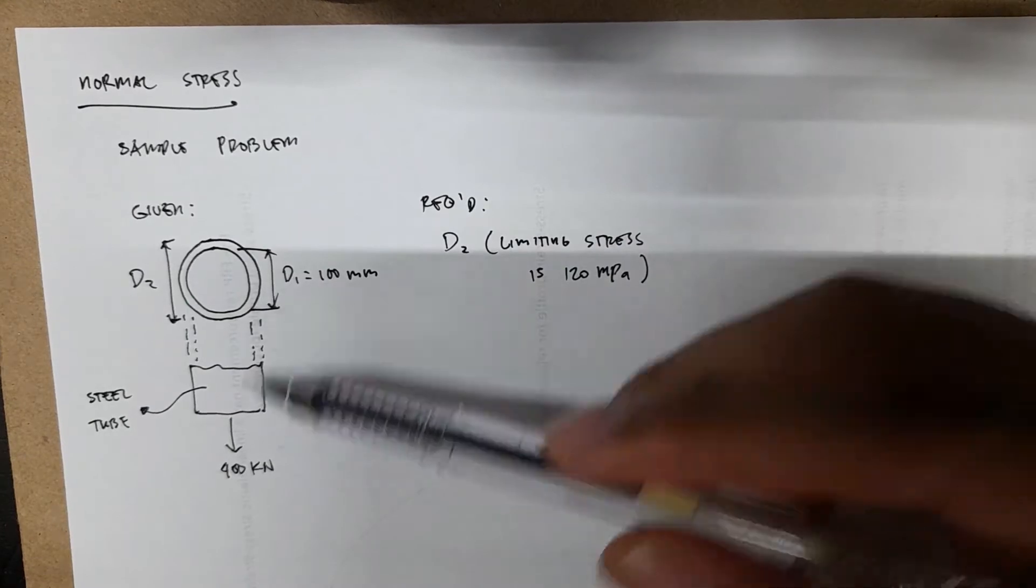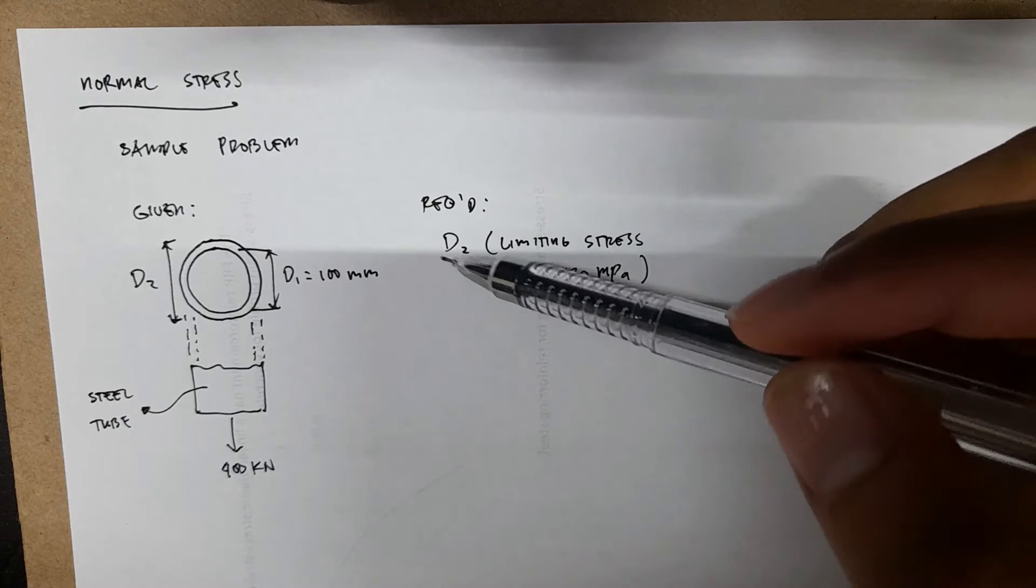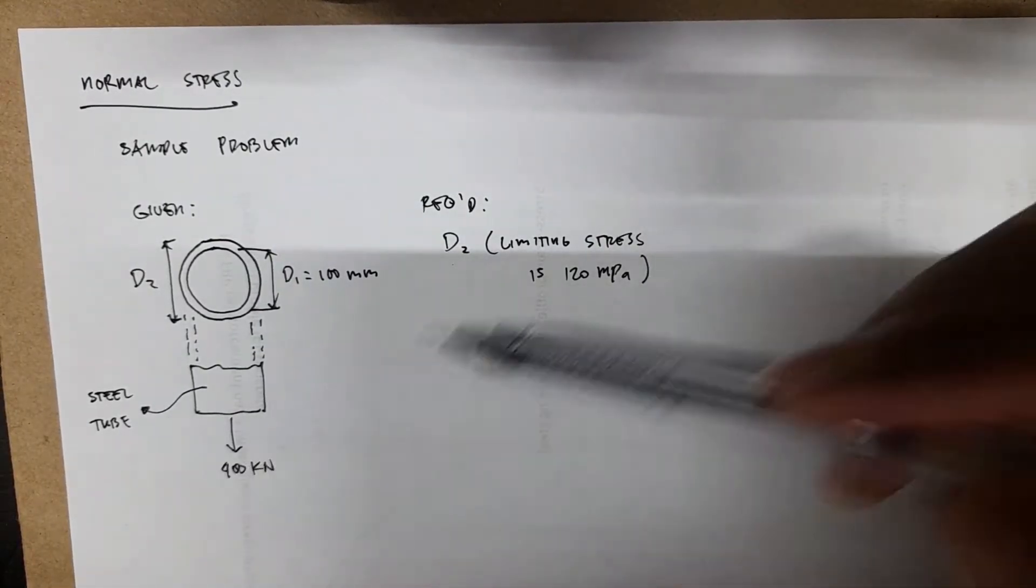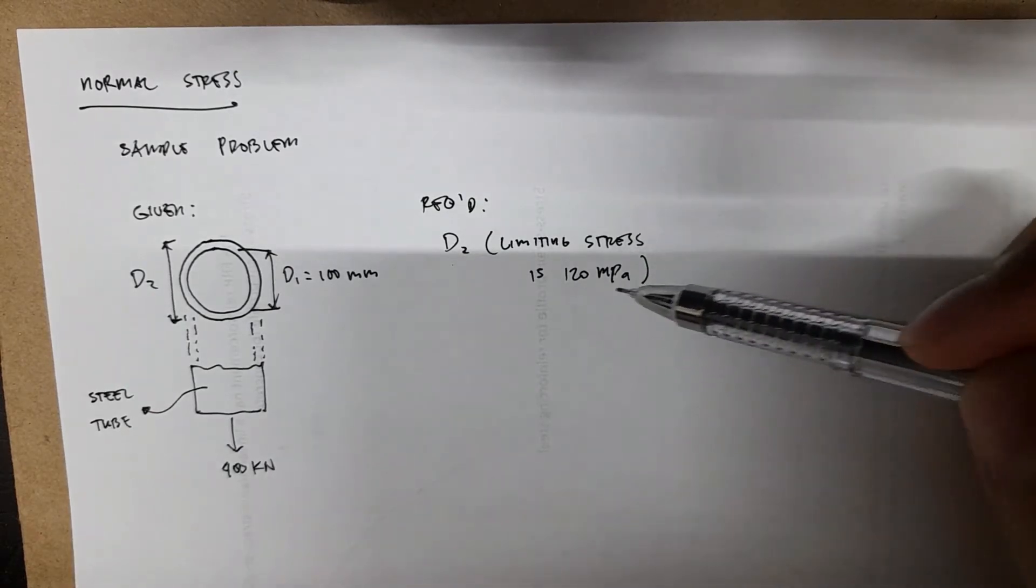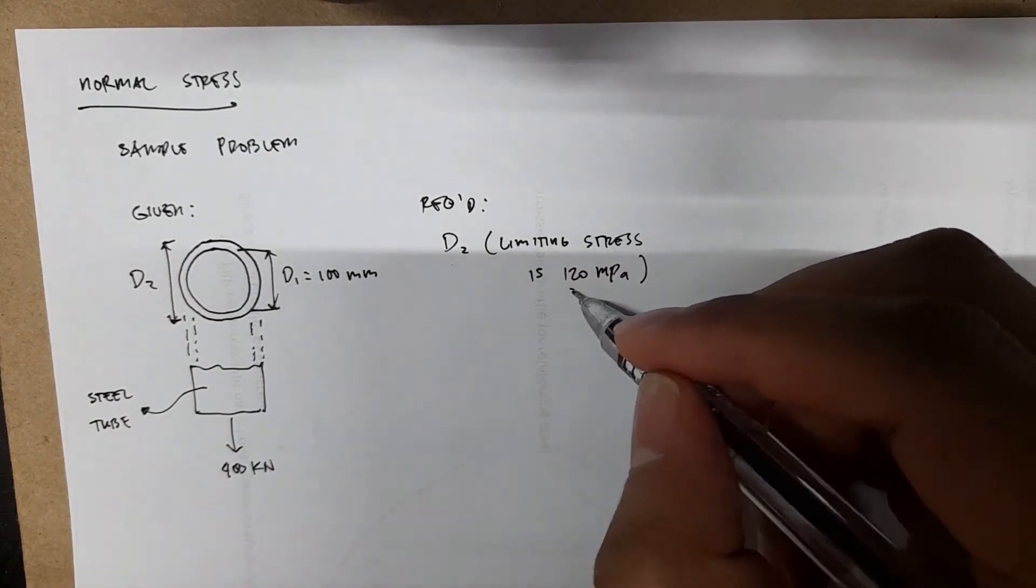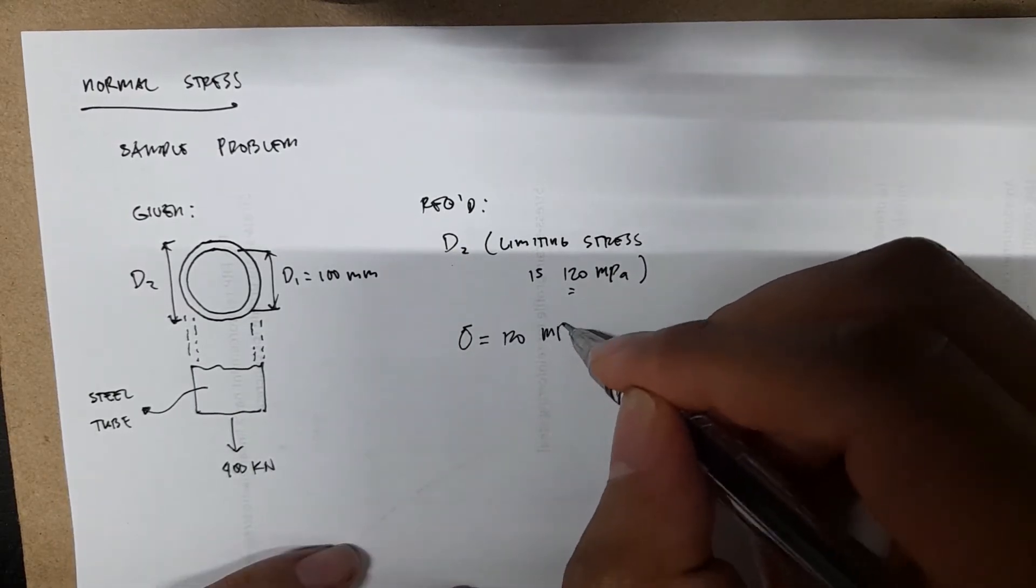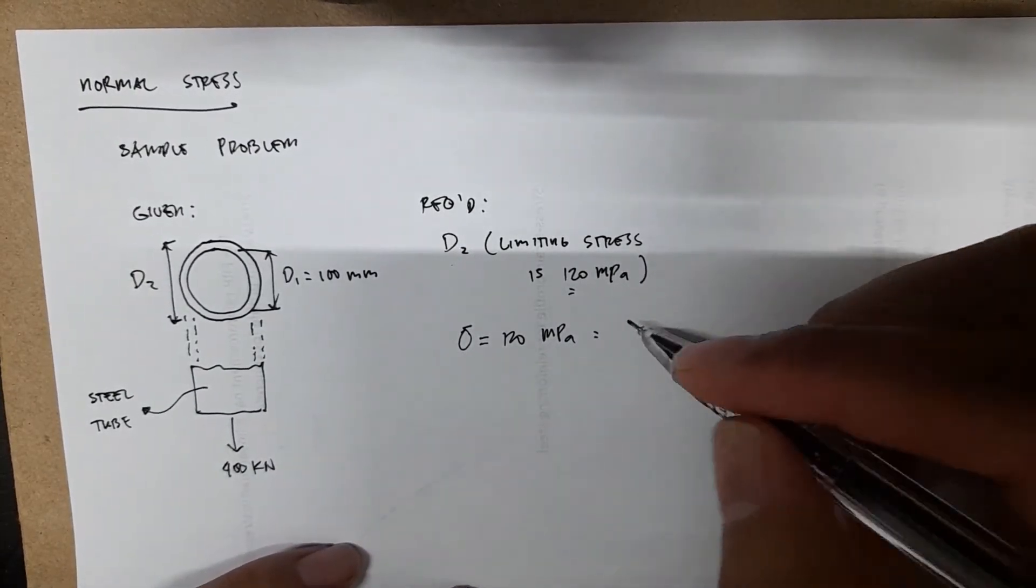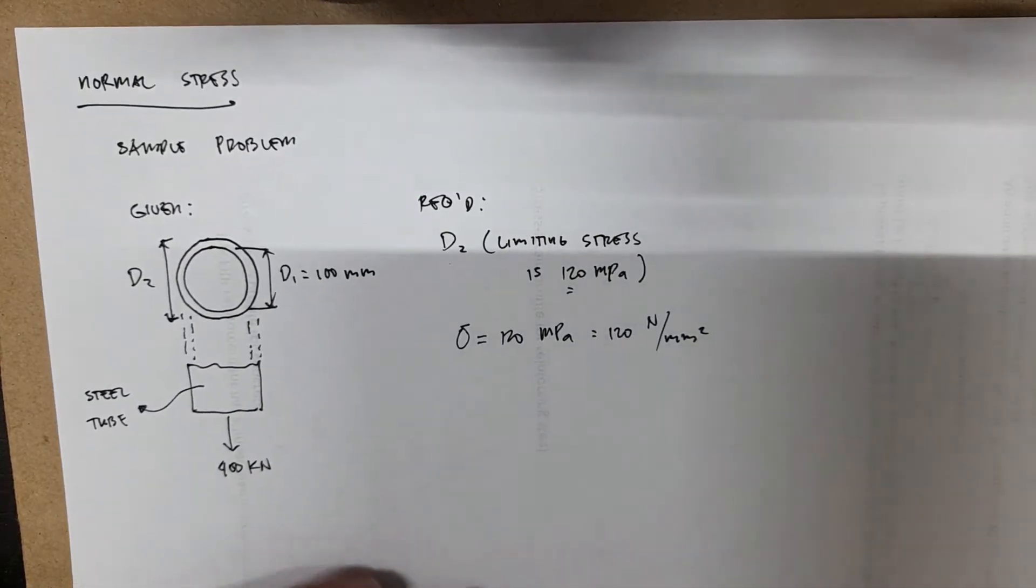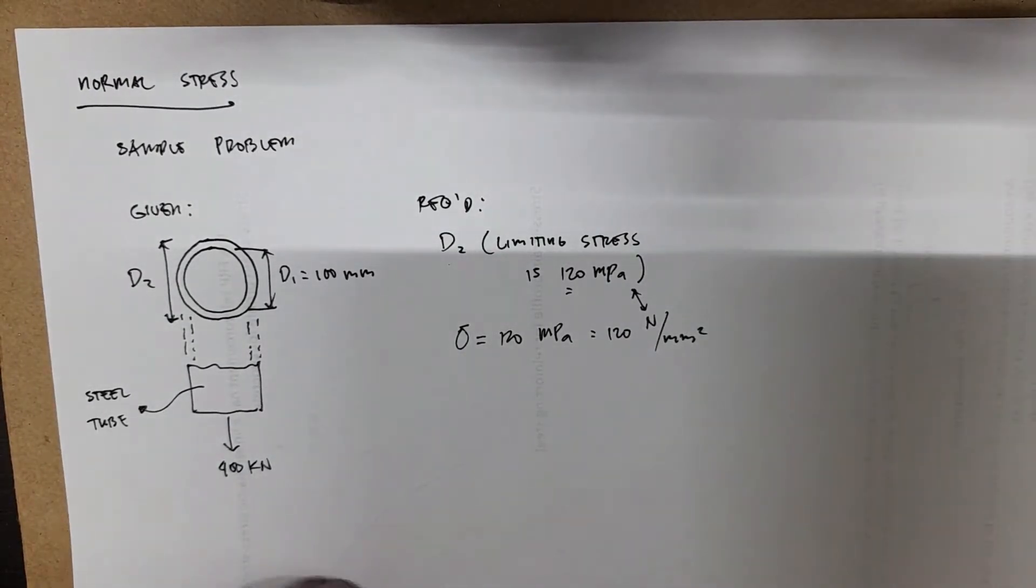What is required in this problem is to find the minimum outer diameter D2, so that the limiting stress in the steel tube of 120 megapascals is not exceeded. This is the sigma, 120 megapascals, or we can also express this in terms of Newton per millimeter squared. That's equivalent, it's the same.